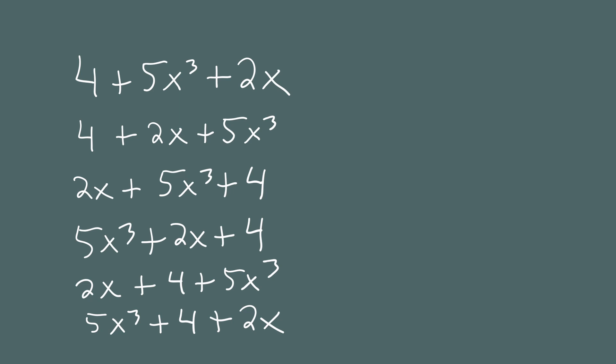You may be thinking, is there a right way or a wrong way to write this? Actually no, there's no wrong way to write this, but there is something called the standard form. That's the way that if you follow certain rules, everyone will always get the same looking polynomial with the terms in the same order. Of these six ways, the one that's in standard form is this one.